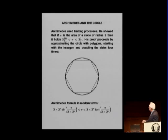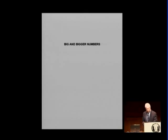And in modern terms, pi is between these two numbers. These are, can be described what Archimedes was doing. Okay. So, let's look at another thing. The question of big numbers.